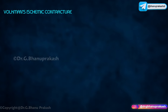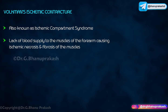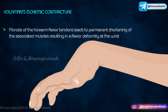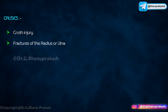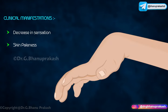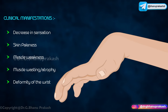Volkmann's ischemic contracture, also known as ischemic compartment syndrome. This results from a sustained lack of blood supply to the muscles of the forearm, causing ischemic necrosis and fibrosis of the muscles. The fibrosis of the forearm flexor tendons leads to permanent shortening of the associated muscles, resulting in a flexor deformity at the wrist. This can be caused by crush injury, fractures of the radius or ulna, burns, or animal bites. Clinical manifestations include decrease in sensation, skin paleness, muscle weakness, muscle wasting or atrophy, and deformity of the wrist with a claw-like appearance.